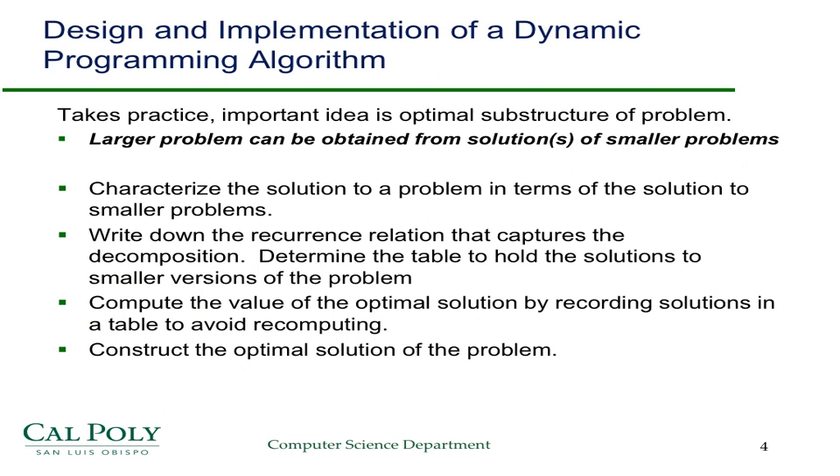So again, we're going to have some steps that we go through every time we solve a dynamic programming problem. The key one is to characterize the solution of the problem in terms of solutions to smaller problems. And after we've done that conceptually, then we have to write down a recurrence relation that actually captures the decomposition. And then we need to record the solutions to the smaller subproblems as we go along, and we use a table for that. The best way to see all this is, obviously, in some examples. There's general agreement that the best way to learn to do dynamic programming is to do it, and so that's the approach we're going to take here.